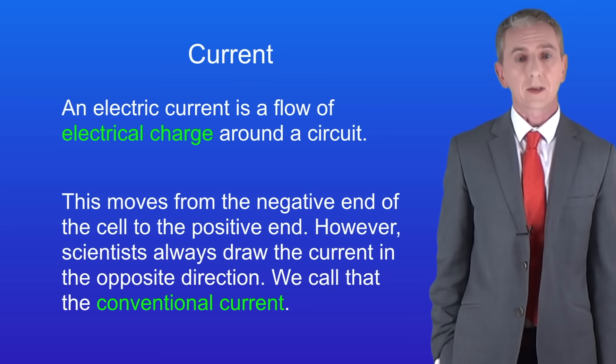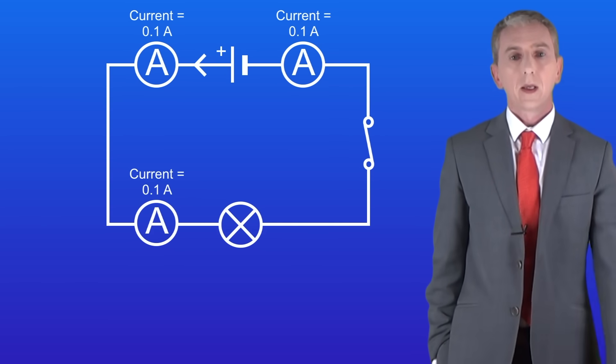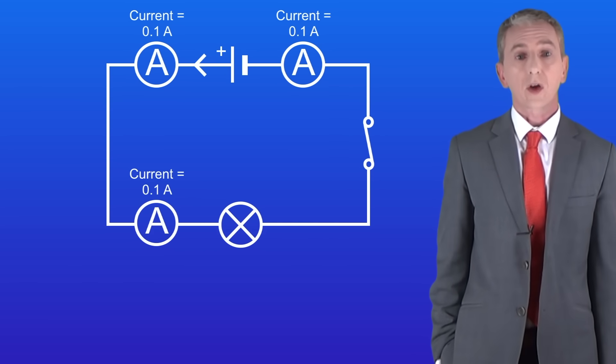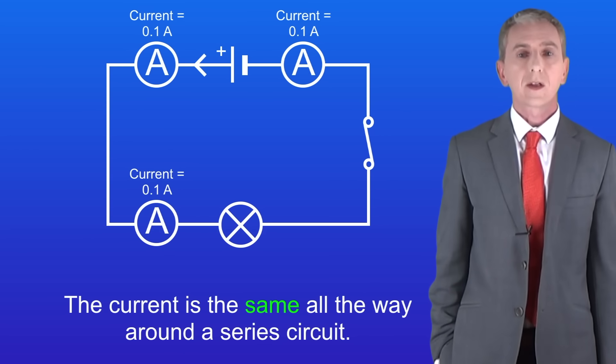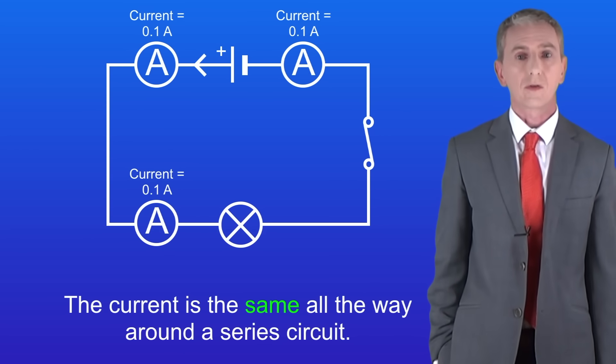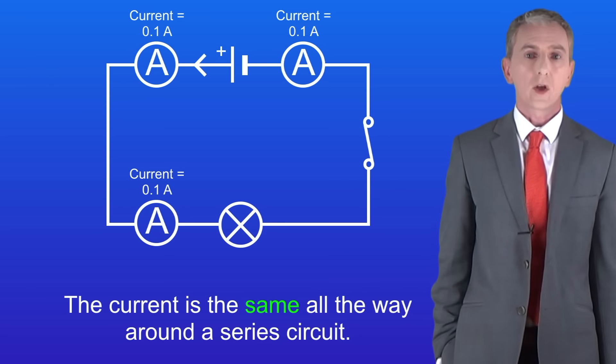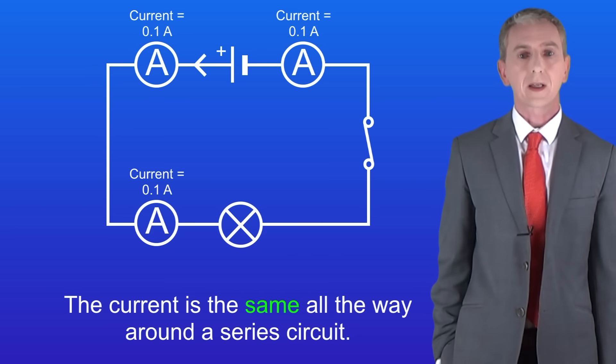We measure the current using an ammeter which we place in the circuit like this. Now this is a series circuit because it doesn't have any branches so the current can only flow in one path. Remember that the current is the same all the way around a series circuit. In this video we're looking at parallel circuits so let's get started.